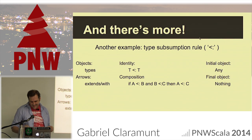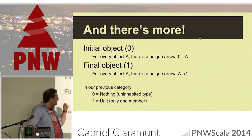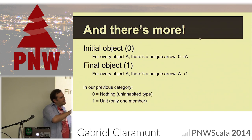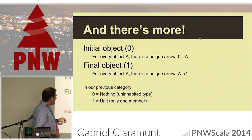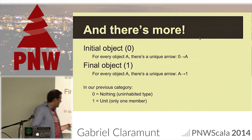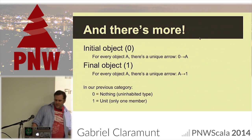So to clarify: if you are thinking of types and functions, your initial object is Nothing and your final object is Unit. Because in the category of types and objects and functions, a total function cannot return Nothing.